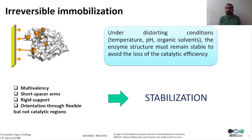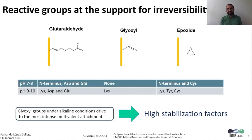Regarding irreversible immobilization, we need to find protocols where the immobilization conditions are not too harsh for enzymes, but allow promoting a multivalent interaction between the protein and the carrier surface through short spacer arms. Moreover, if we control the rigidity of the carrier and the region of the enzyme surface where immobilization takes place, we can achieve a highly stable immobilized enzyme through these irreversible attachments. To do so, we can activate the carrier with two main types of reactive groups: epoxy and aldehyde groups.